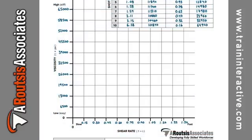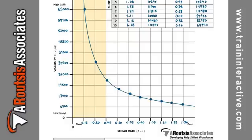When graphing this, viscosity is plotted on the vertical y-axis, and the shear rate is plotted on the horizontal x-axis. Shear thinning will appear as a steep decline in the viscosity of the polymer as the shear rate increases.